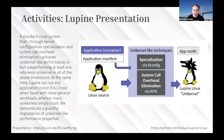Lupin is targeted more towards serverless-type workloads, where you want to instantiate a VM with a very lightweight kernel just to run a function. Cloud providers have something like Firecracker, but Lupin is a very lightweight kernel that allows you to run, for example, many AWS Lambda-like functions simultaneously — instantiating them and then tearing them down very quickly.